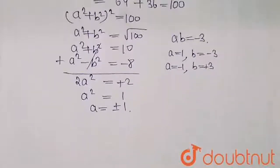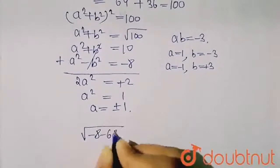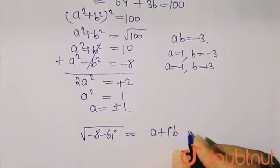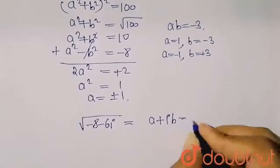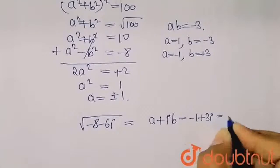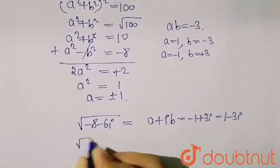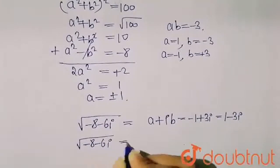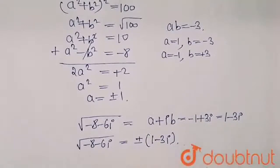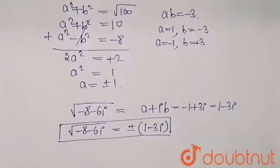So the complex number can be written as: the square root of minus 8 minus 6 iota equals A plus iota B, giving the values minus 1 plus 3 iota or 1 minus 3 iota. So I will write it as: square root of minus 8 minus 6 iota equals plus or minus 1 minus 3 iota. This is my answer for this question. Thank you.